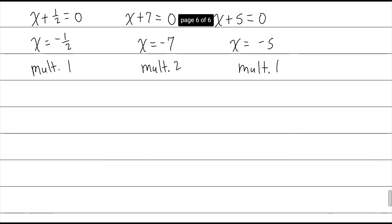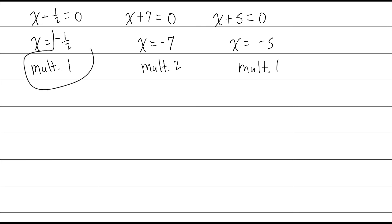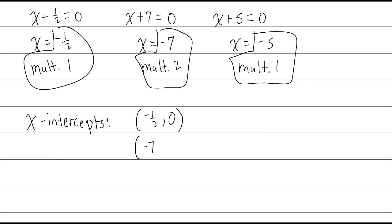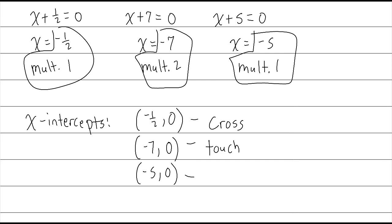Now let's talk about the graph — specifically the x-intercepts. We have three x-intercepts: (-½, 0), (-7, 0), and (-5, 0). Looking at the multiplicities to determine cross or touch: at -½ the multiplicity is 1, which is odd — odd means cross. At -7 the multiplicity is 2, which is even — even means touch. At -5 the multiplicity is 1, which is odd — so we're back to cross. That's what the x-intercepts look like.